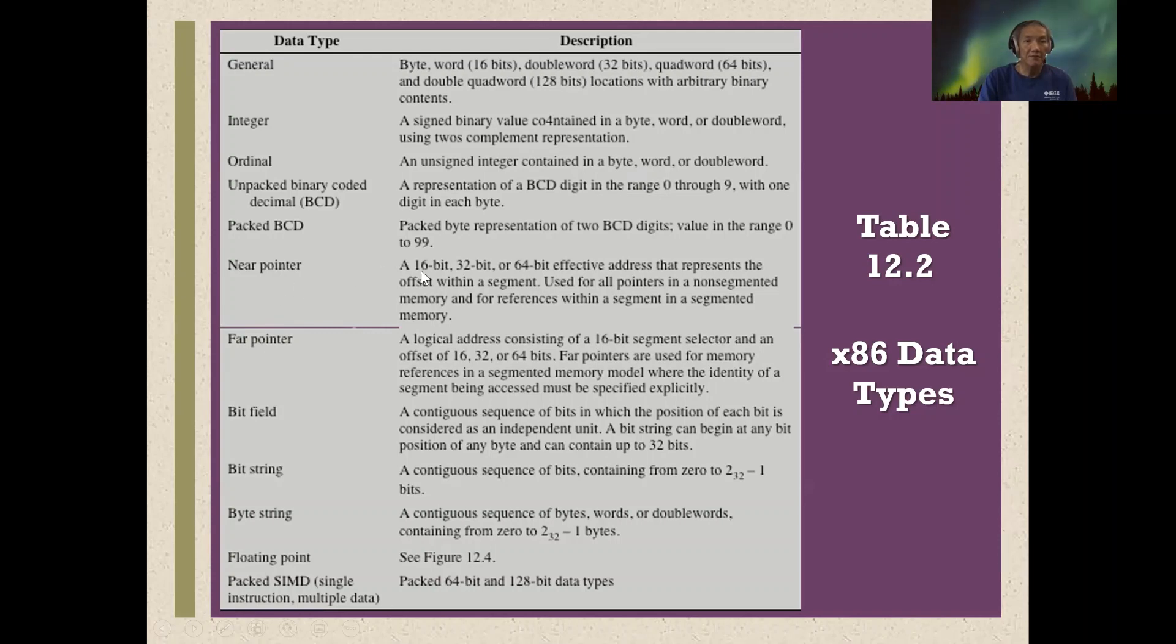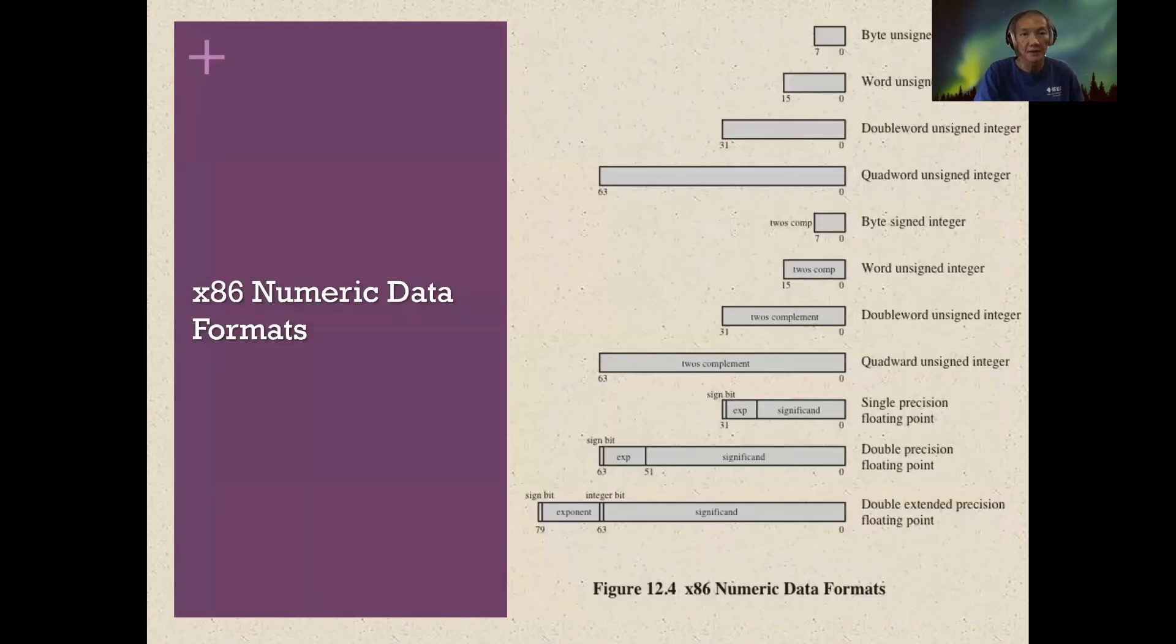Far pointer is as big as the processor itself. For Intel, nowadays it's 32 or 64 bits. You can specify each bit. You can also represent floating point, and mostly floating point has the standard of IEEE. So each machine can understand that this bit string represents the same number.